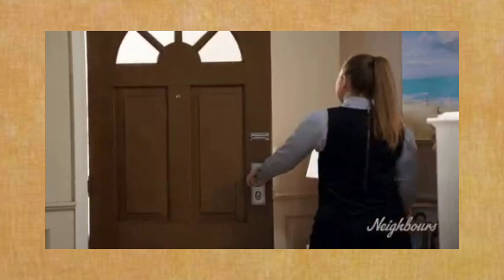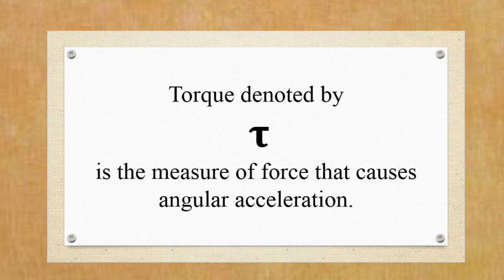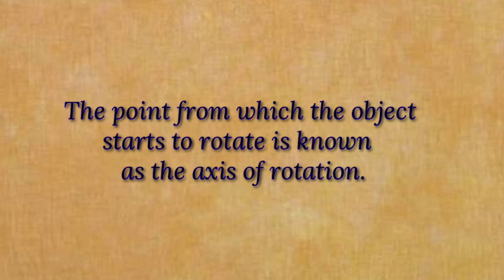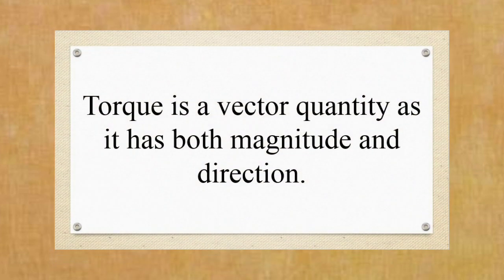Everyone who's ever opened a door has applied torque without even knowing what torque means. Torque, denoted by the lowercase Greek letter tau, can be defined as the measure of force that causes angular acceleration. The point from which the object starts to rotate is known as the axis of rotation. Torque is equal to r times F times sin theta. Here, F is the force causing the torque and r is the moment arm. The r vector denotes the position from the axis of rotation to the point the force is applied on the object, and theta is the angle between the direction of the r vector and the direction of the force vector. The arrow on top of tau denotes that torque is a vector quantity, which means torque has both magnitude and direction.